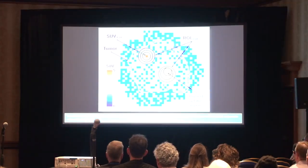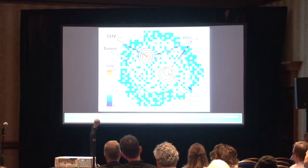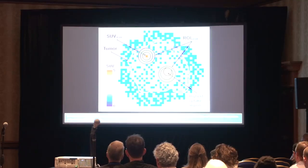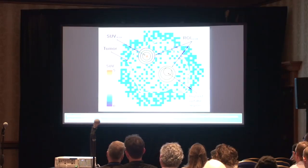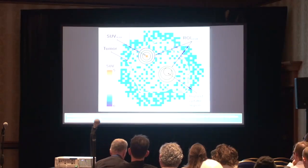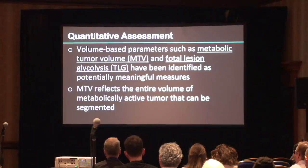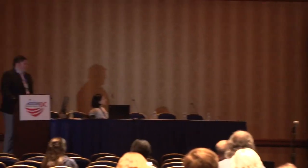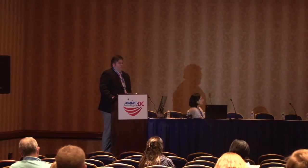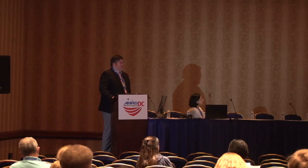One problem with PERCIST and other semi-quantitative measurements of FDG uptake is that most tumors are very heterogeneous. Here we have an example of a heterogeneous lesion — if you just identified the SUV max, the hottest point, you could be fooled into thinking the patient had a very active tumor. But looking at the remainder, you can see it's much more heterogeneous with regions that are not very avid. So we're starting to look at more quantitative techniques, and several volume-based parameters such as MTV and TLG have been used. Several studies with lung cancer, esophageal cancer, and others have shown these are better predictors of prognosis and survival than SUV max.